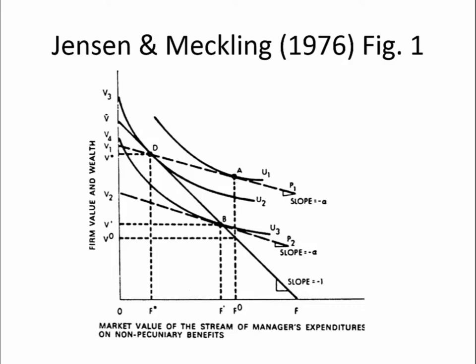That sounds fine, except for one thing: what does that actually do to the value of the firm? Going back to the old budget constraint and looking at the value from there, we can see that now the firm is really only worth V0. Why is it worth less? Because the manager has increased consumption of non-pecuniary benefits from F-star to F-zero, and in doing so has reduced the value of the firm.